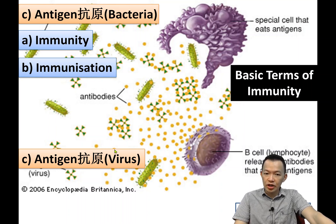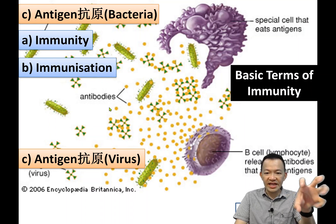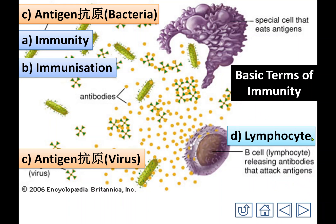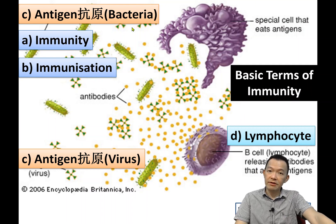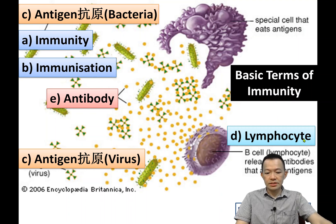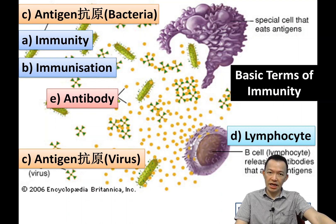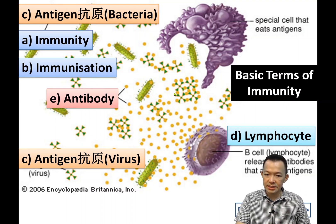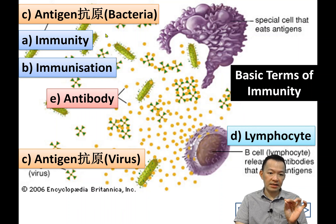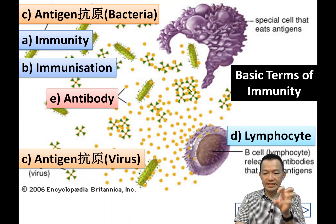When any antigen like bacteria or a virus enters your body, it will be detected by lymphocytes. The lymphocytes are inside the lymphatic system. When the lymphocyte detects the antigen, it produces a protein called an antibody. The antibody binds together with the antigen and destroys it, so the antigen can no longer function in our body — it dies.